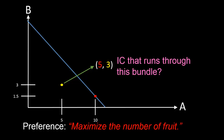Starting from the yellow bundle, suppose we give Chris 1 apple and take away from him 1 banana. Then we'll end up on the green bundle. Just as argued before, this green bundle will be just as good as the yellow bundle, so it lies on the indifference curve through the yellow bundle. Similarly, if we start again at the yellow bundle, give Chris 1 extra banana and take away 1 apple, we'll end up at the blue bundle — also on the same indifference curve. Keeping this exercise going, we'll get a whole bunch of bundles on the same straight downward-sloping line, which is precisely the indifference curve through the yellow bundle.